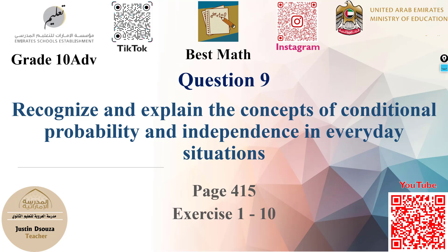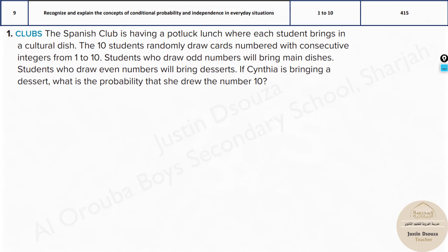In this video, we will learn about conditional probability. The Spanish club is having a potluck lunch where each student brings in a cultural dish. The 10 students randomly draw a card numbered with consecutive integers from 1 to 10. Students who draw odd numbers will bring main dishes. Students who draw even numbers will bring desserts. If Cynthia is bringing a dessert, what is the probability that she drew the number 10?